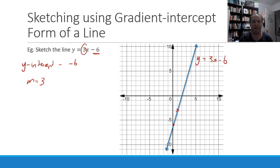So plot the intercept, then use the gradient, in this case gradient of 3. One square to the right, three squares up. There's our second point. Draw our line.